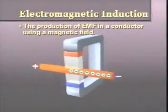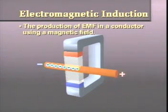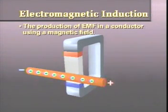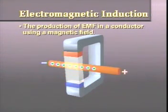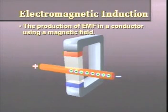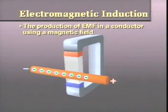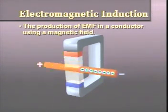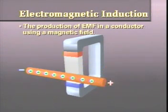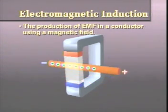In addition to the ability of current to create magnetism, you also previously saw the ability of magnetism, or a magnetic field, to create an electromotive force in a conductor without any physical contact. This phenomenon is electromagnetic induction, the production of EMF in a conductor using a magnetic field.